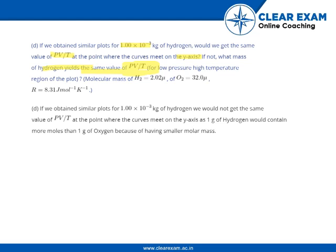The molecular mass of hydrogen is 2.02 mu, and of oxygen is 32 mu, and R equals 8.31 joules per mole per kelvin.